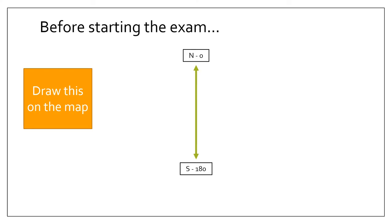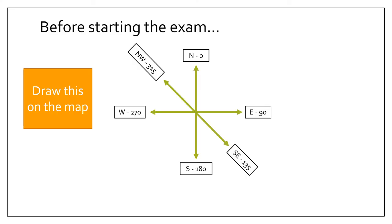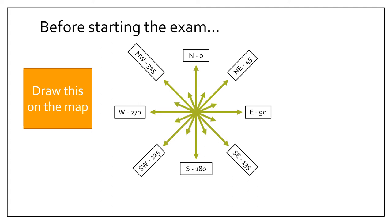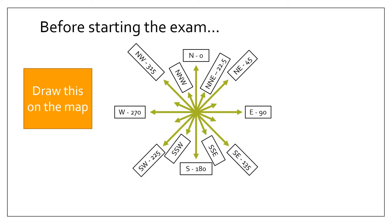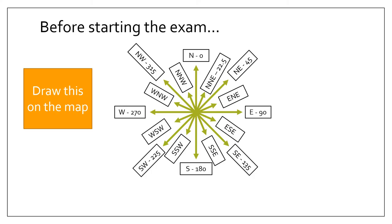Before starting the exam, I recommend that you draw a compass with the various bearings onto your map — that will be very useful when answering a couple of questions. Start with north, south, east, and west, then northwest, southeast, northeast, southwest. For the bearings in between, you always start with the main direction and bolt on the next: north-northeast, north-northwest, south-southeast, south-southwest. For those between northeast and east, use east-southeast or east-northeast — quite hard to remember but learn them off by heart.